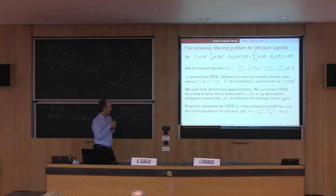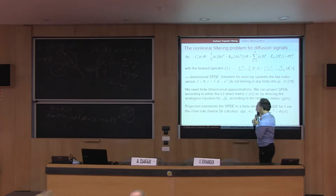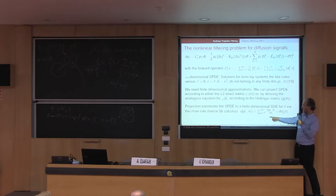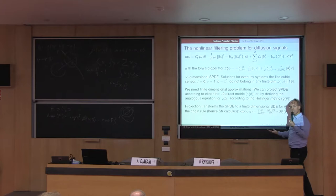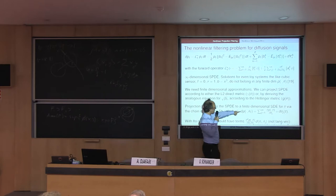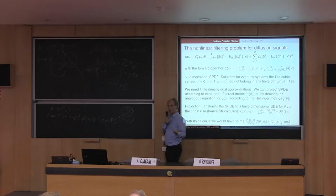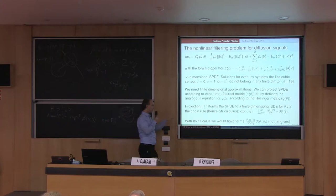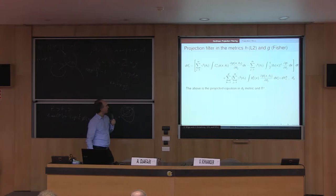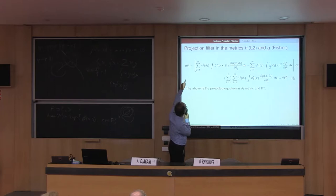The reason we use Stratonovich calculus is that we need the chain rule. On the left-hand side, you compute the differential of the parametric density — this is a curve in parameter space. You can apply the chain rule; these are tangent vectors, and this gives the equation for your parameters. With Itô calculus, the differential involves second-order terms that are difficult to interpret geometrically. We are investigating that — it has to do with jets — but in the current framework, we don't know how to interpret it in geometric terms.